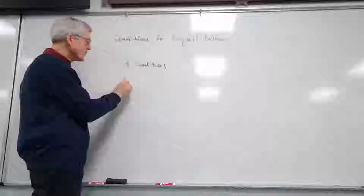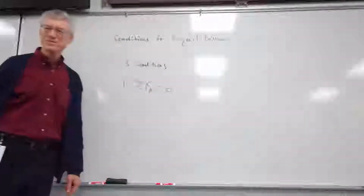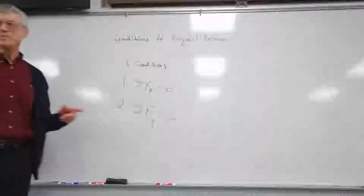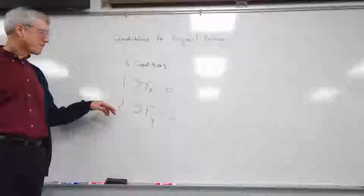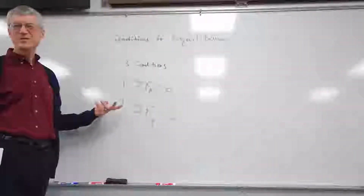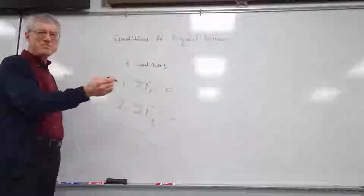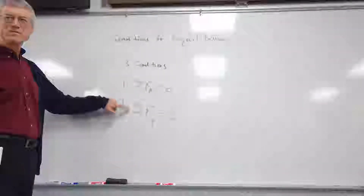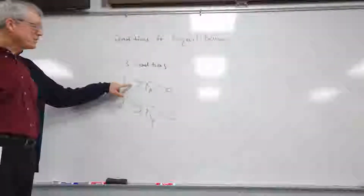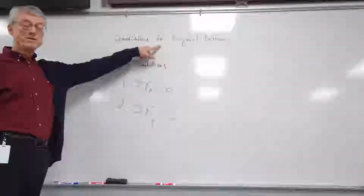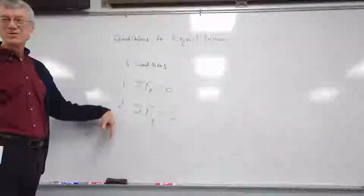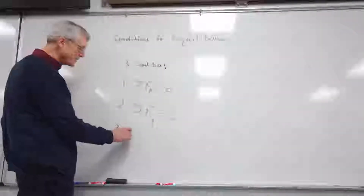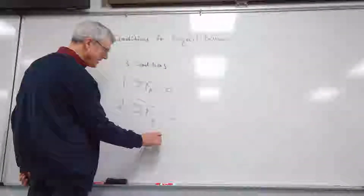There are three conditions for equilibrium. Number one: the sum of the x-forces adds up to zero. Number two: the sum of all the y-forces adds up to zero. Those are the ones we talked about last semester — you already know that. There is technically a third one where the sum of the z-forces adds up to zero, but we do everything on the board in two dimensions, so don't worry about that right now.